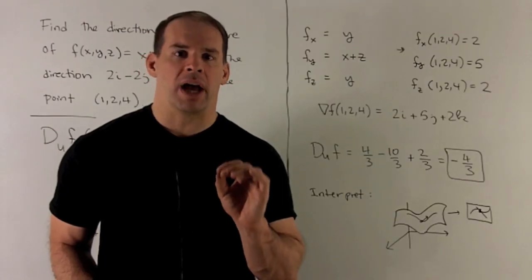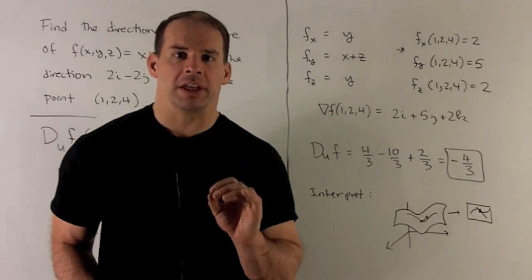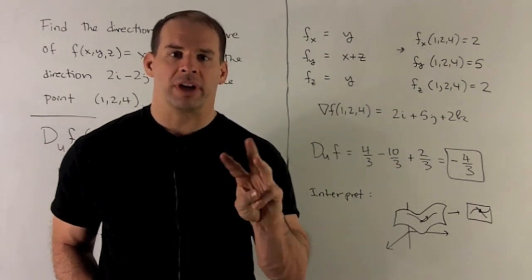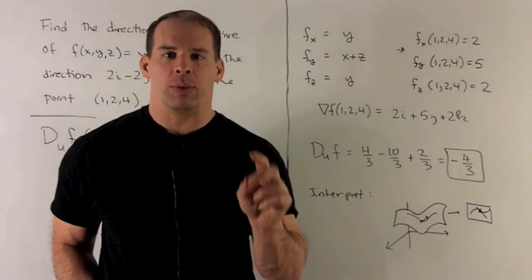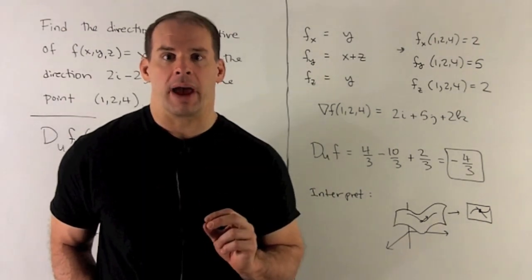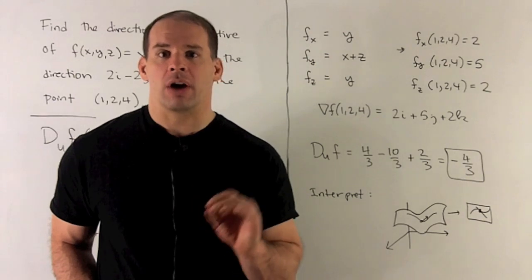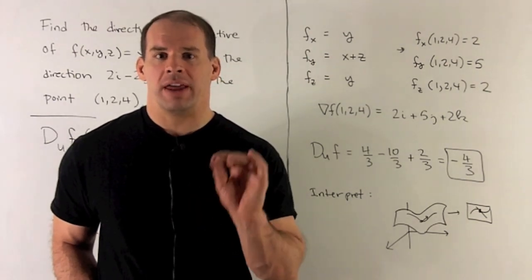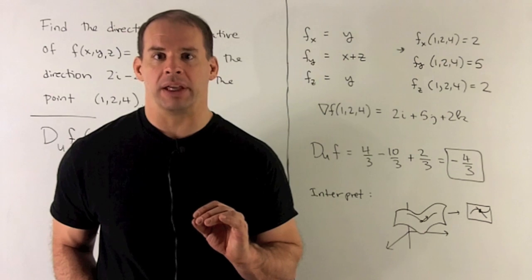If we wanted to interpret that minus 4/3, we'd need to be able to see in four dimensions. We have three variables for our function, and then we'd need a fourth dimension for the values that come out. So let's pretend our functions only have two variables, and then we could just draw a picture, and it'll give us the idea of what's happening.